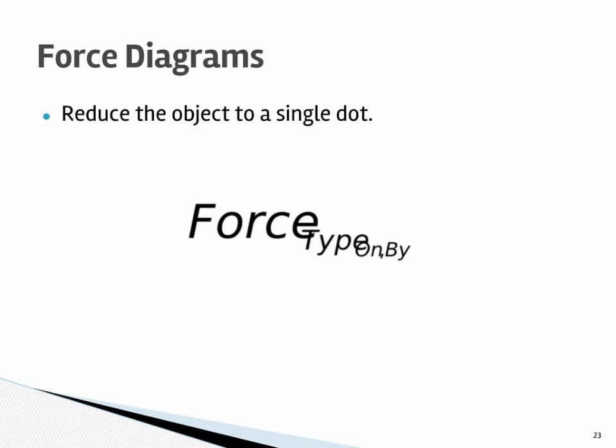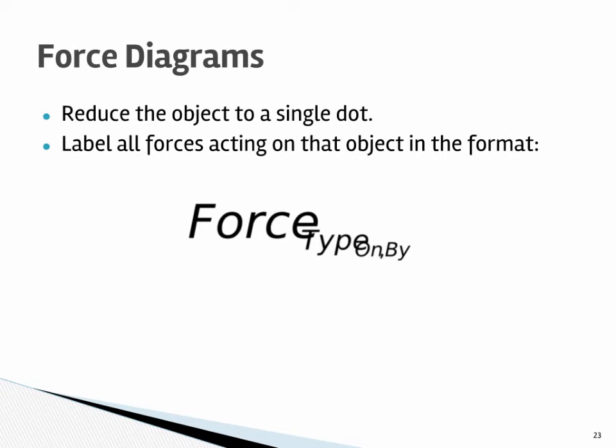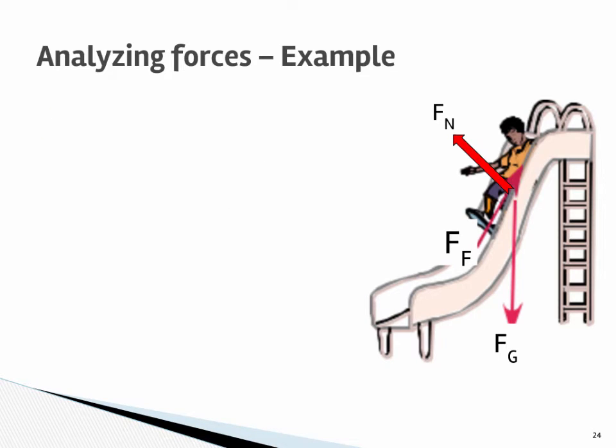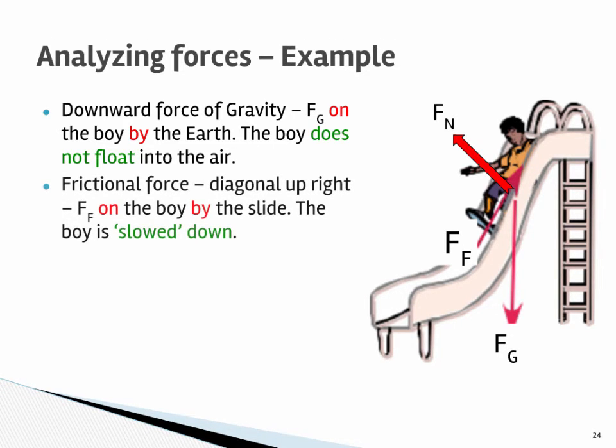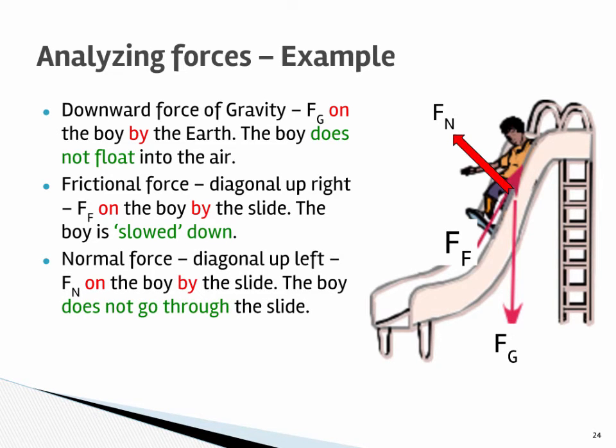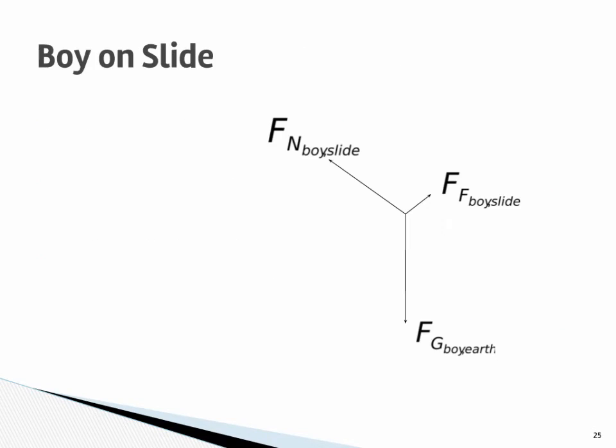So reduce the object to a single dot. Label all the forces acting on that object in that format that we just discussed. So in this one we have three forces: gravity, normal from the slide, and friction. So the force of gravity is on the boy by the earth. The force of friction is on the boy by the slide. And the force of normal is on the boy by the slide. So this is what a completed force diagram for the boy on the slide would look like.